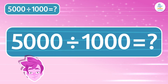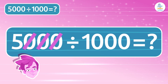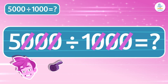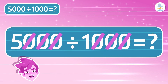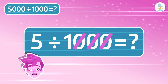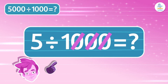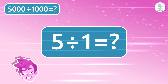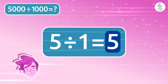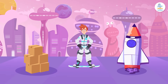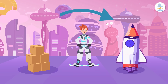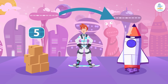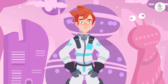To do this division with our trick, faster than the traditional way, we remove the three zeros from 5,000 and the other three zeros from 1,000. By doing this we have a much simpler operation: 5 divided by 1 is 5. That means we will put five boxes of supplies in each of the 1,000 rockets. We're ready for the mission — we have everything we need!